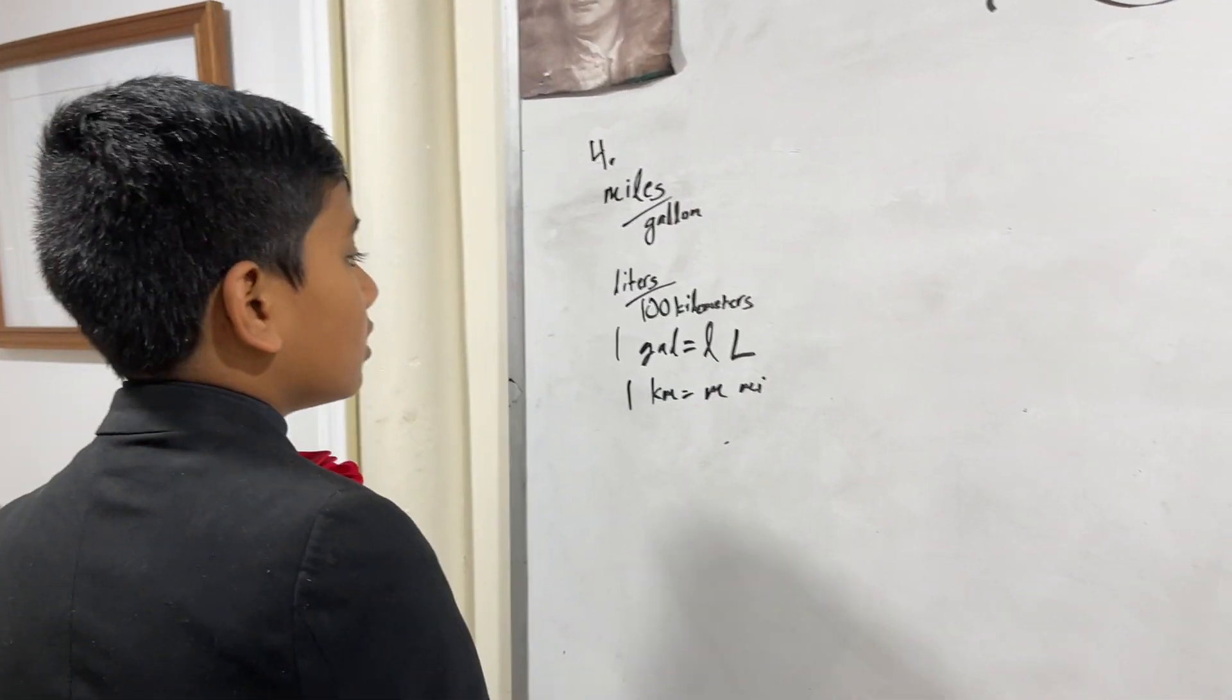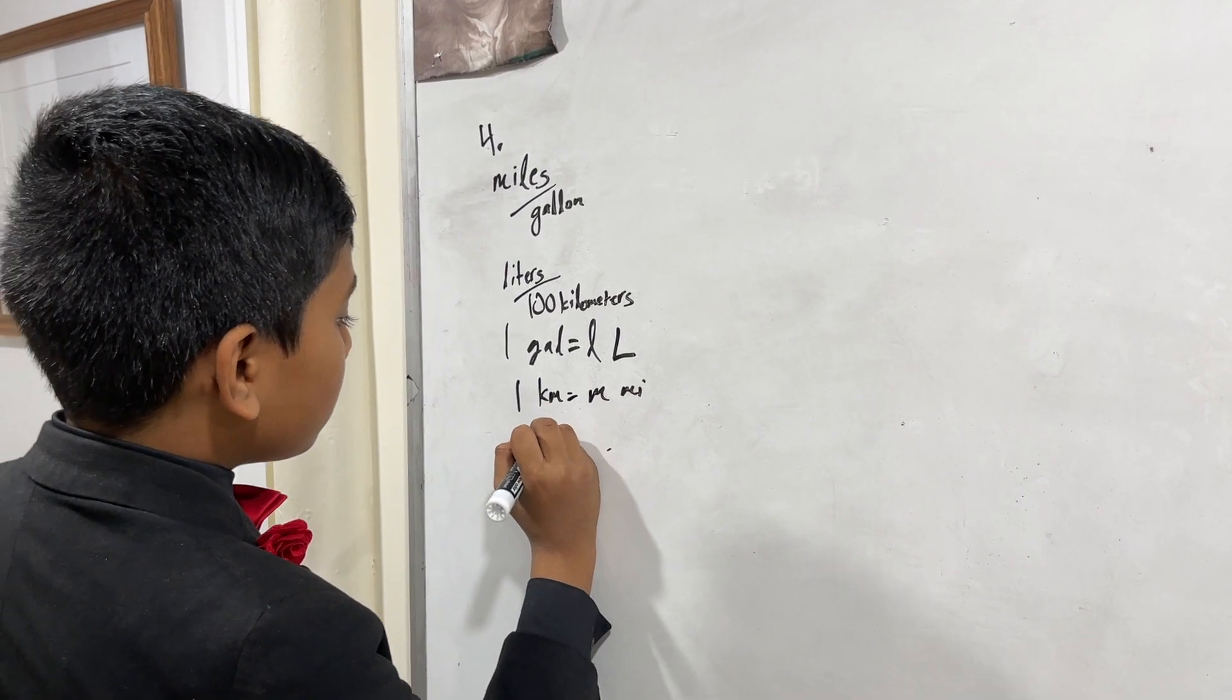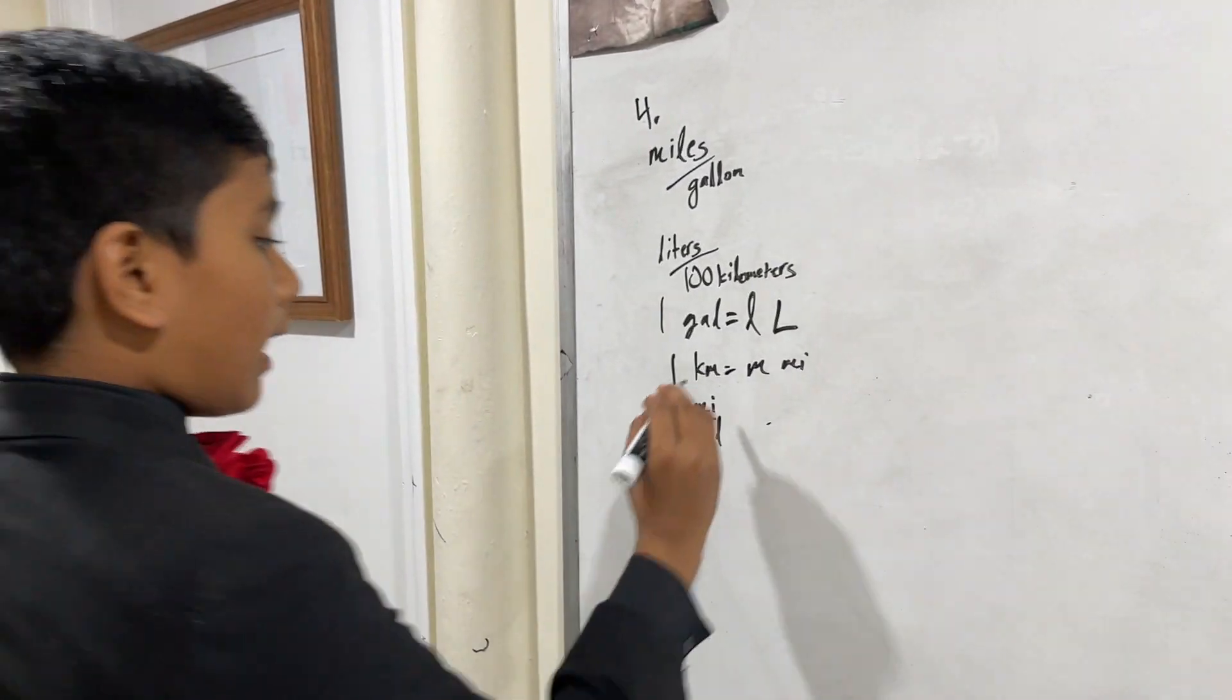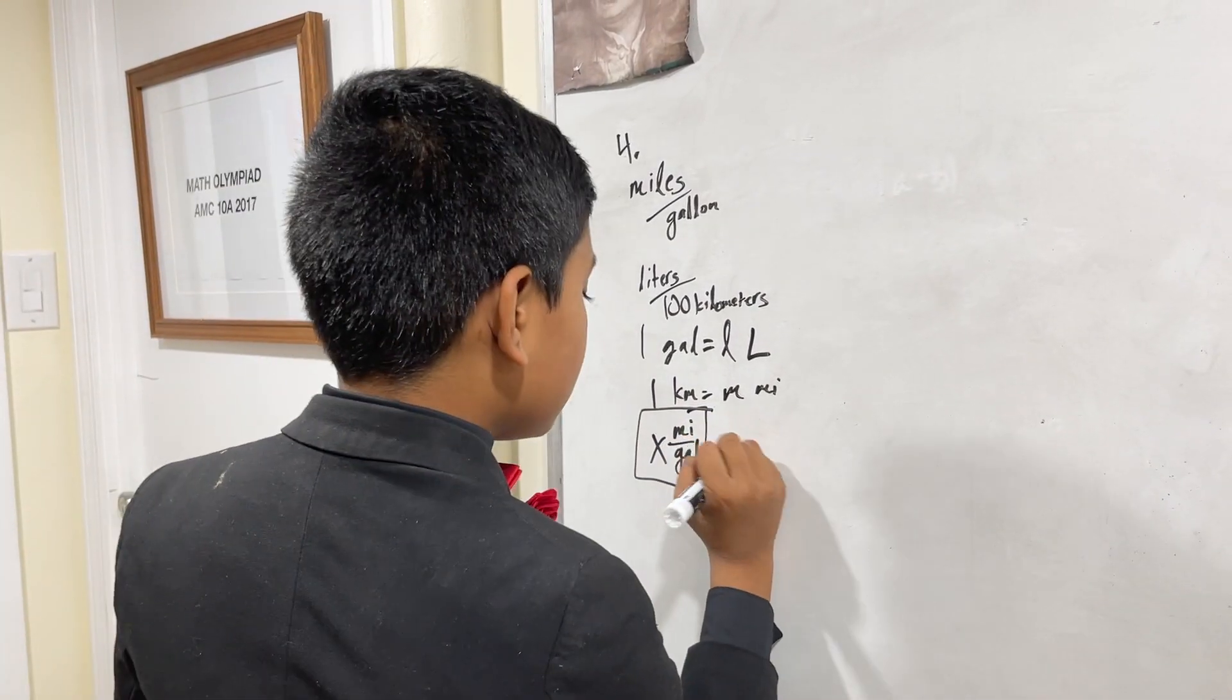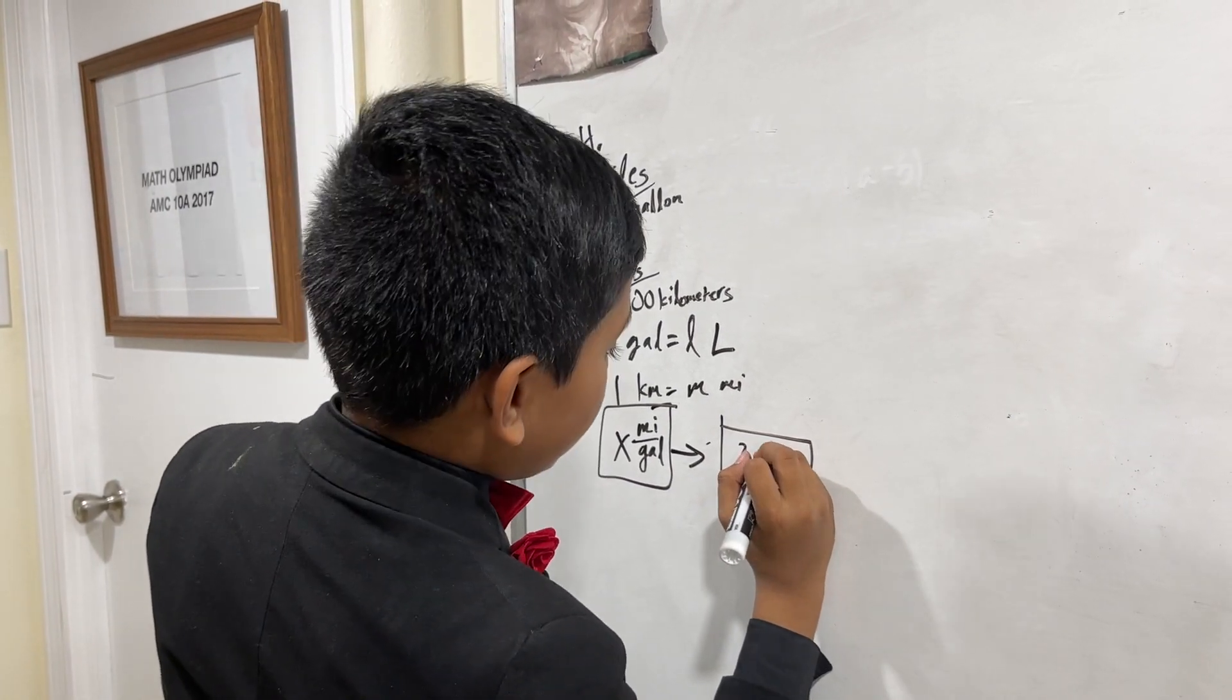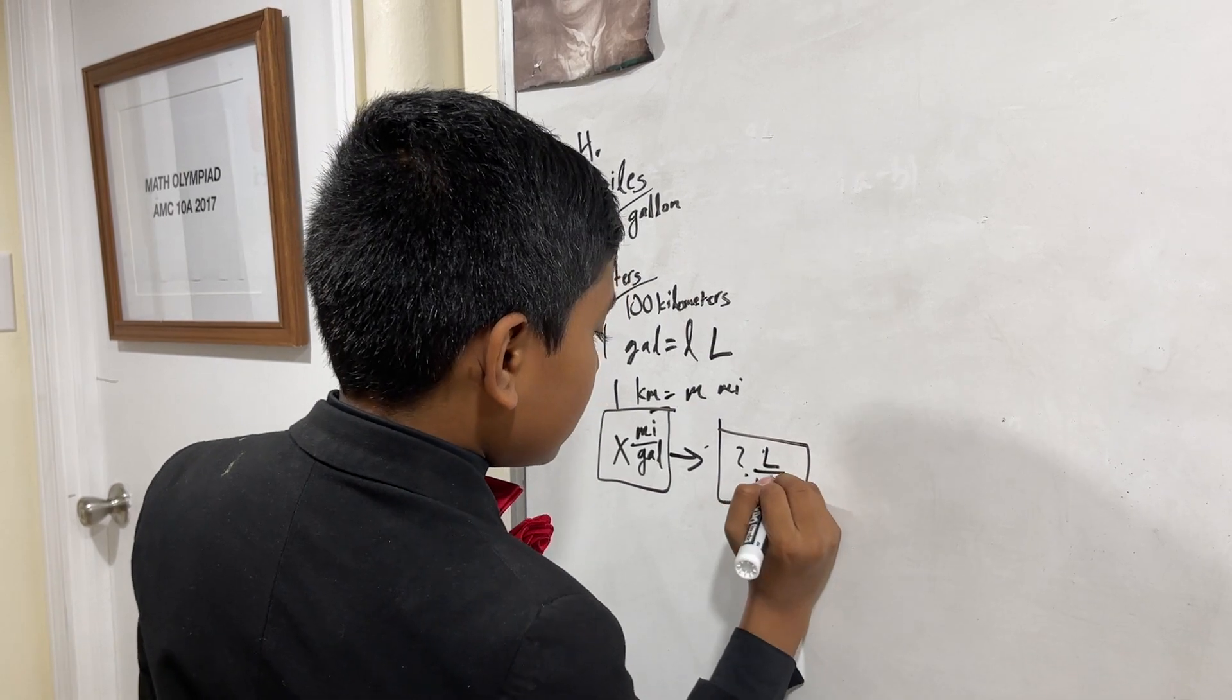what is, how do you express the fuel efficiency of a car that has a fuel efficiency of X miles per gallon? Okay, I don't really know a way to phrase this, so I'll just write it down and hope you understand.